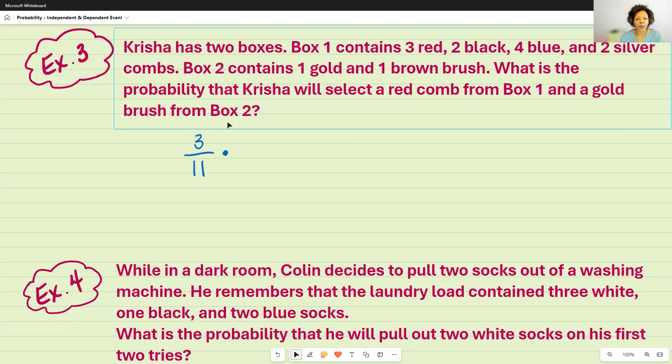From box two, I want to select a gold brush. So how many brushes are there all together? There's two. Out of the two, how many are gold? One. So again, I'm just going to keep it in the same form that it's currently in. It's already fractions. So I'm just going to multiply the numerators, multiply the denominator, and leave it in the simplest form.